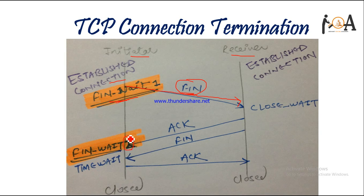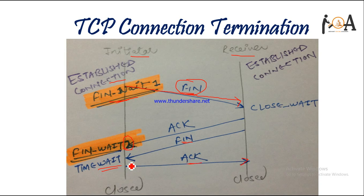The server then sends its own FIN bit. Upon receiving it, the client's state changes from FIN Wait 2 to Time Wait, which confirms that the connection is being closed. In response to this close, the client sends an acknowledgement back to the server. During the Time Wait state, this acknowledgement is sent by the client to the server, and after this the connection is fully closed.